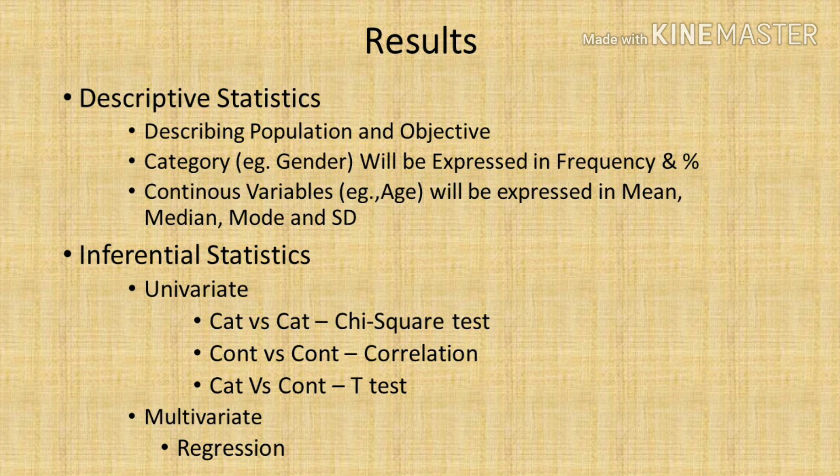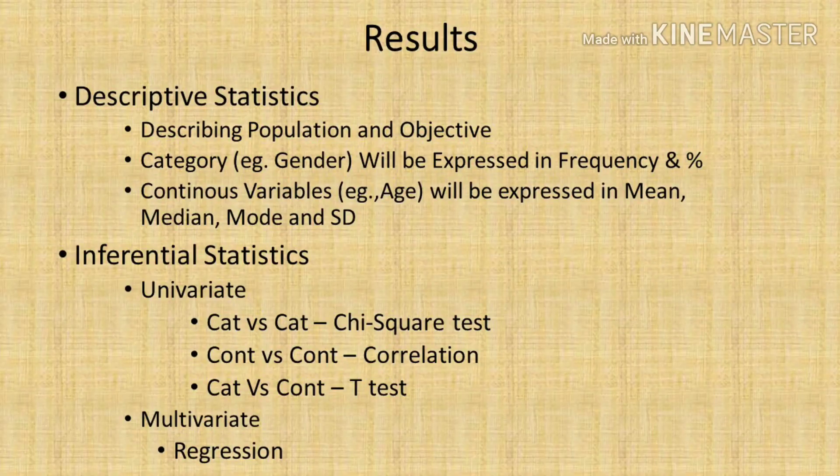If it is a categorical variable, we will express it in frequency and percentages. If it is a continuous variable, we express it in mean, median, mode, and standard deviation — basically the measures of central tendency and measures of variability or dispersion.